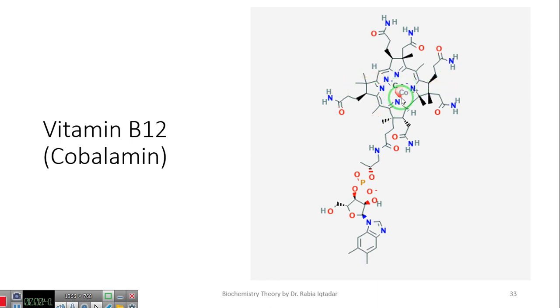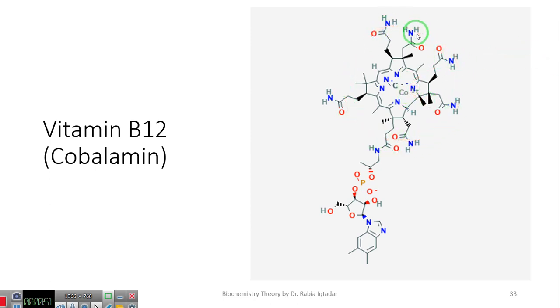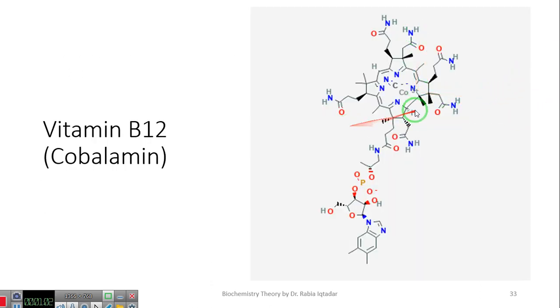In the middle there is a cobalt atom, and on all four sides there are pyrrole rings, or heavily substituted pyrrole rings. This whole system is called corrin ring system. Below the corrin ring system, there is another ring system, which is called DBI, dimethylbenzimidazole. Here, this is the corrin ring system, and below it is dimethylbenzimidazole.